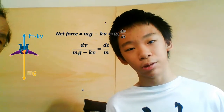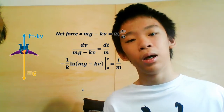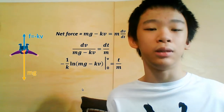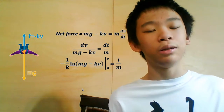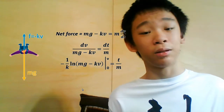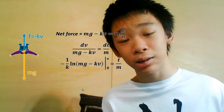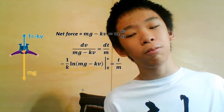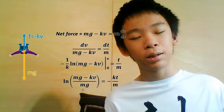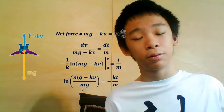We can then integrate both sides. We get negative 1 over k times the natural log of (mg minus kV) equals t over m. Evaluating the left side from the starting velocity to the final velocity, and remembering that the starting velocity is 0, we get negative 1 over k times the natural log of (mg minus kV) over mg equals t over m.